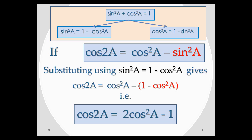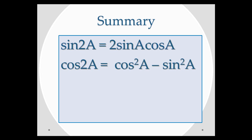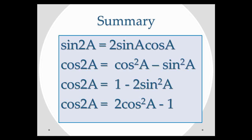So we've used knowledge we already have — the addition formulae and the fact that sine squared a plus cos squared a equals 1 — to prove all four double angle formulae. In summary: sine 2a equals 2 sin a cos a; cos 2a equals cos squared a minus sin squared a; and using substitutions, that's also equal to 1 minus 2 sin squared a, and also 2 cos squared a minus 1.